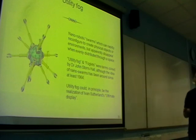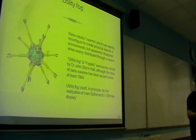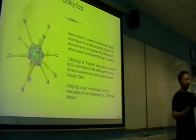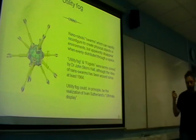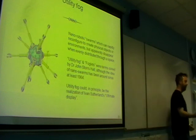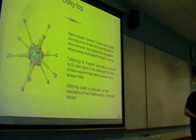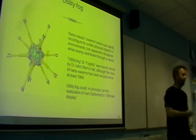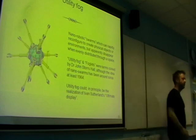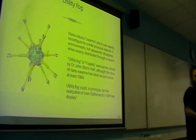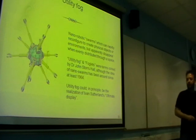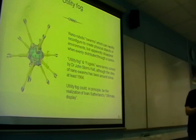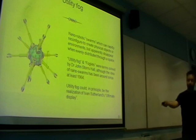So basically, utility fog is the link between these concepts. We've talked about uploading as an extreme AI, and virtual autonomous zones as an extreme VR. Utility fog is the link between them - if you're still talking about stuff that's in the physical world, utility fog can make this stuff happen around you, if it works.